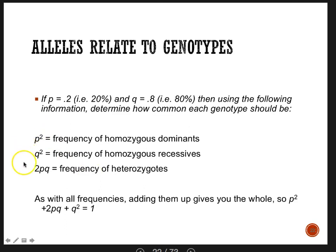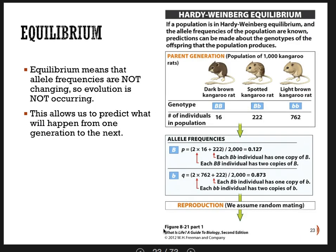There is a lab that goes over this. We're going to talk about how we can use this information to calculate everything we need. Your book does a pretty good job of stepping you through this. We're going to take a look at this parental generation here. A thousand is the number of our kangaroo rats in this parents' generation. Because it's a whole population, we're not calling this the parental generation — it's just the first generation. And what we're going to try to do is understand Hardy-Weinberg equilibrium.